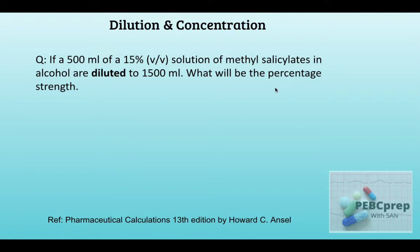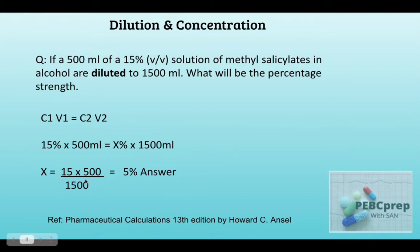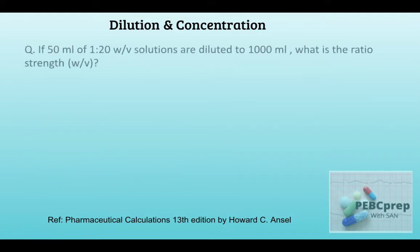C1 is 15 percent with V1 of 500 milliliters. We have to find C2 with V2 of 1500 milliliters. When we put all these values into the C1V1 = C2V2 formula and calculate, we get five percent.